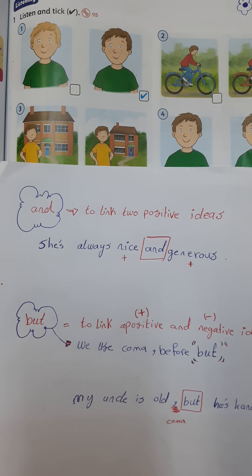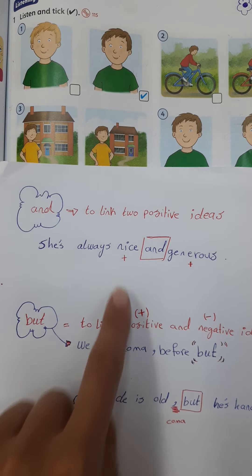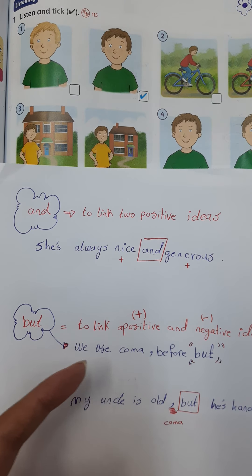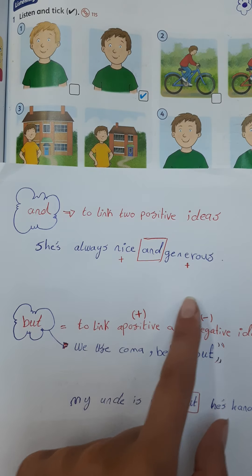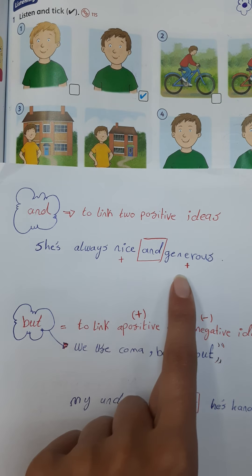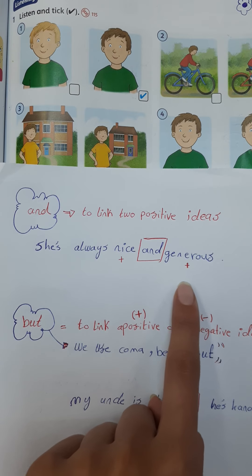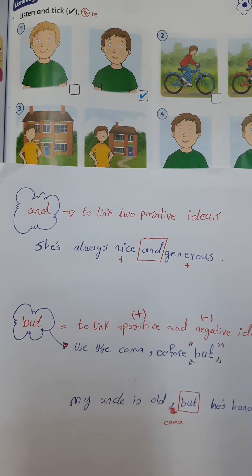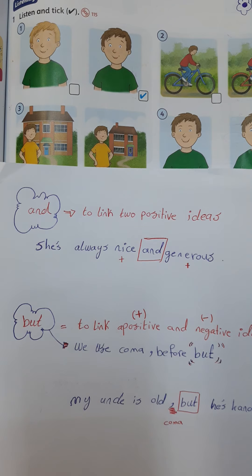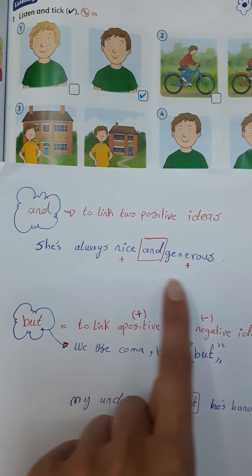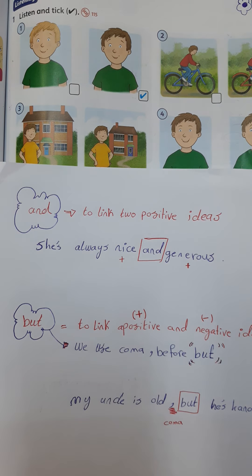For example: 'She's always nice and generous.' Is this sentence negative? No, it's positive. We don't have a negative in this sentence, so you must use 'and.' Both ideas — nice and generous — are positive. You would not say 'She's always not nice and generous.' That's false. Two positive ideas means you use 'and.'